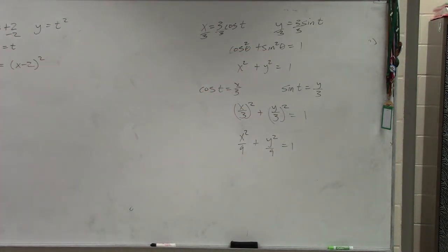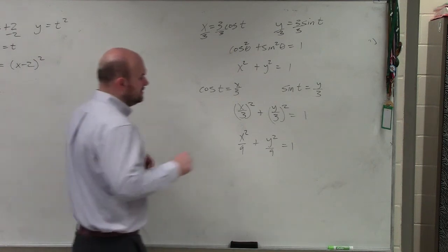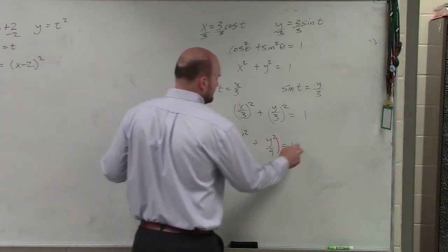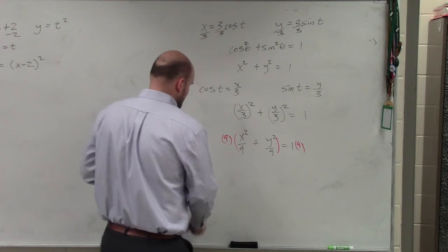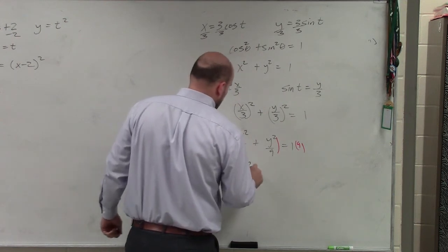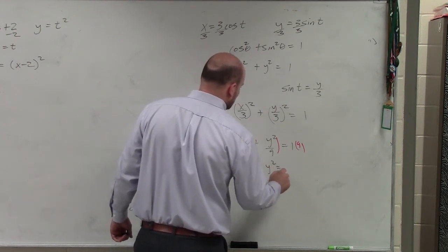And then if I'm looking for this, when we're doing a circle, what we want to do is get rid of the denominators. We multiply by nine on both sides. And you get x squared plus y squared equals nine.